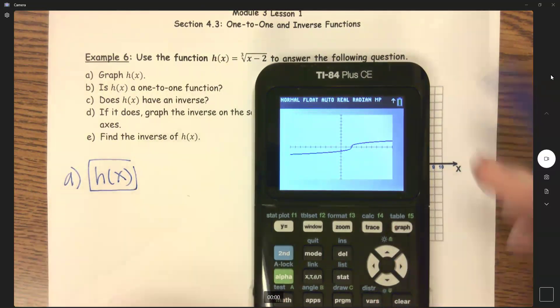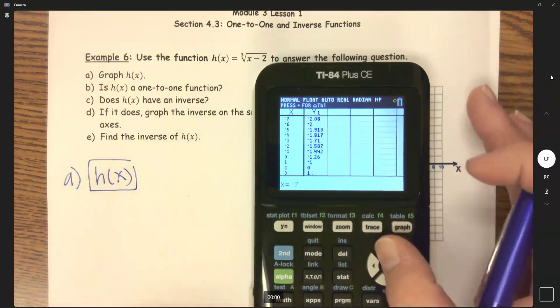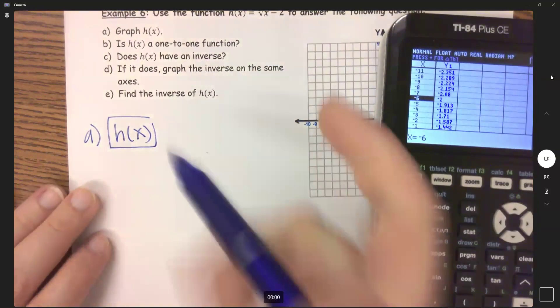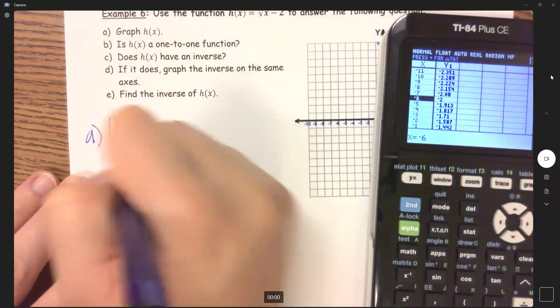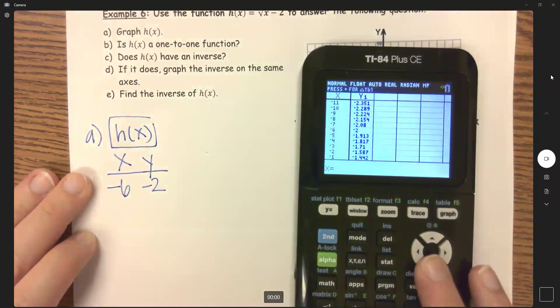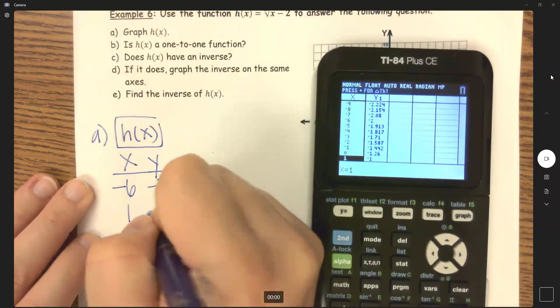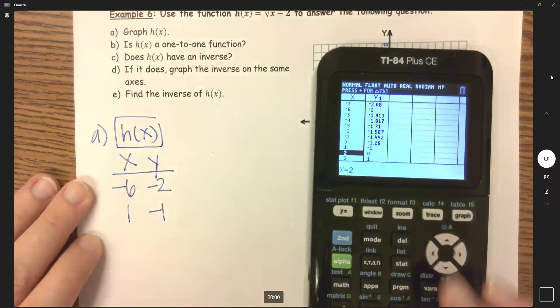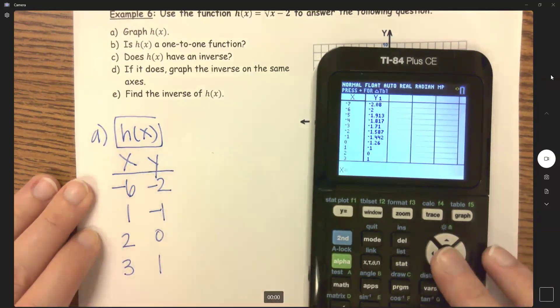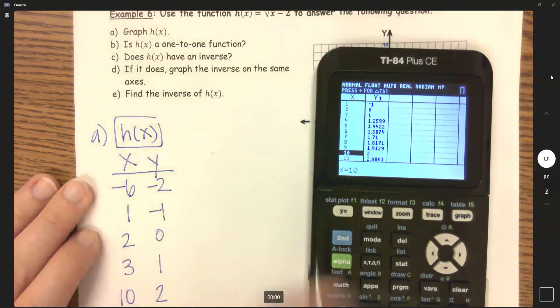So let's go to table. Hit second graph. And I'm going to put every number in here that's going to fit. So it looks like I'm going to start right here at negative six, negative two. I'm only doing the whole numbers that fit. So one, negative one. And then we have two, zero. And three, one.